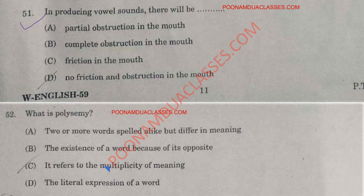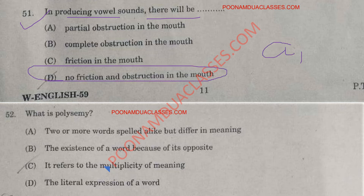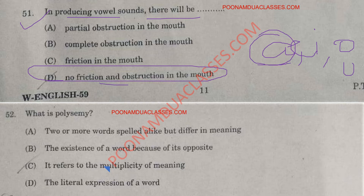Question number 51: In producing verbal sounds, there will be no friction and obstruction in the mouth. Think of the sounds produced by the vowels A, E, I, O, U. For example, when you say the word 'alphabet' and produce the sound A, there will be no friction or obstruction in the mouth.